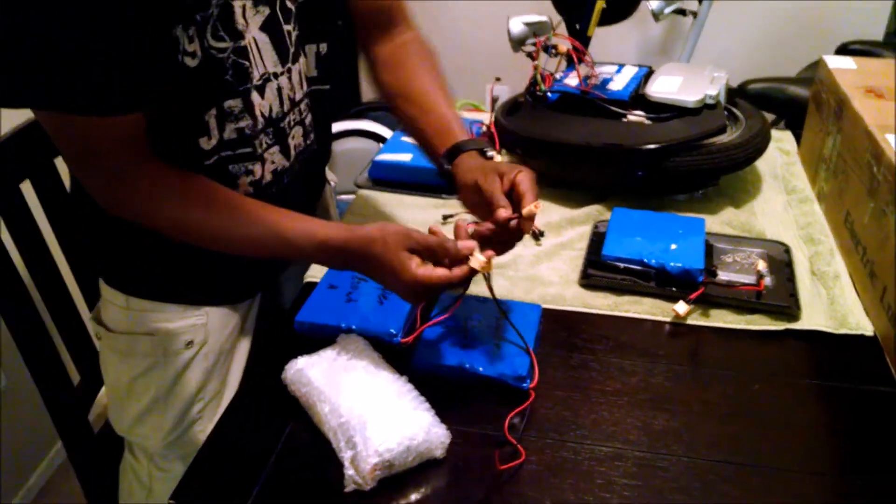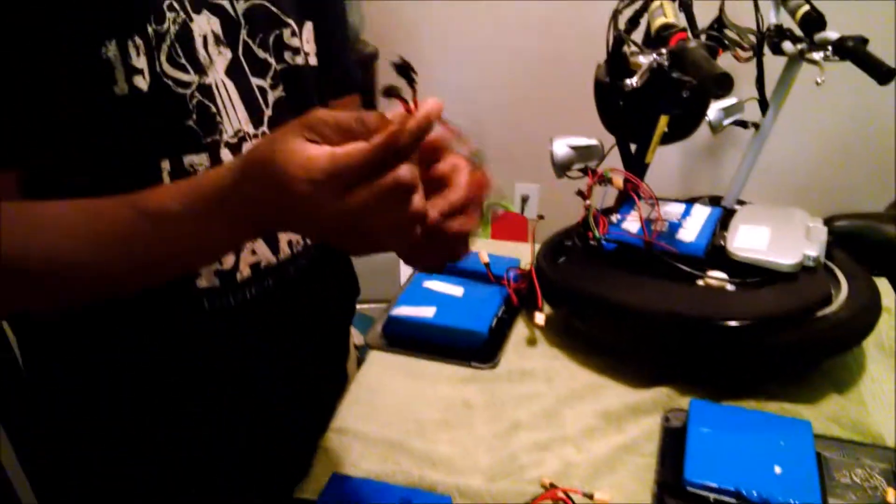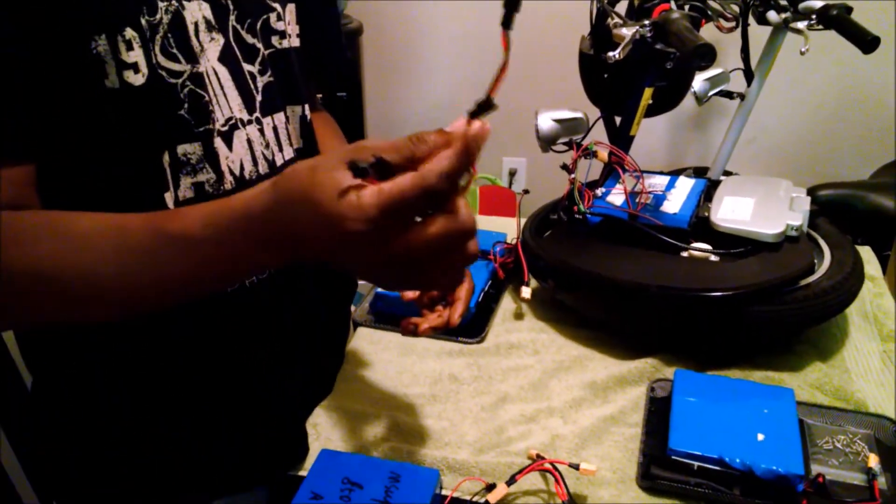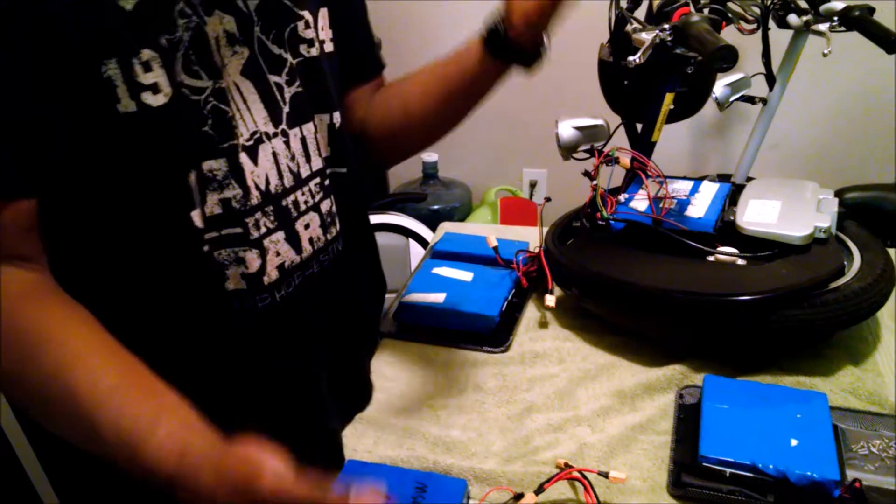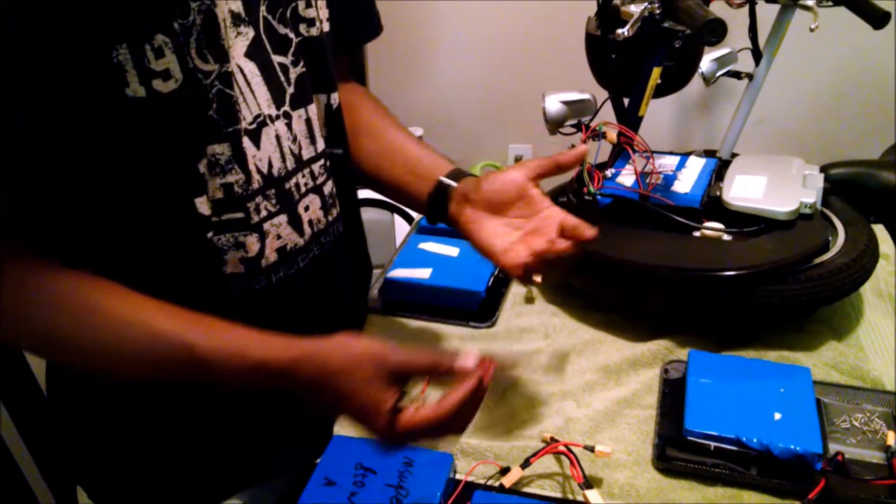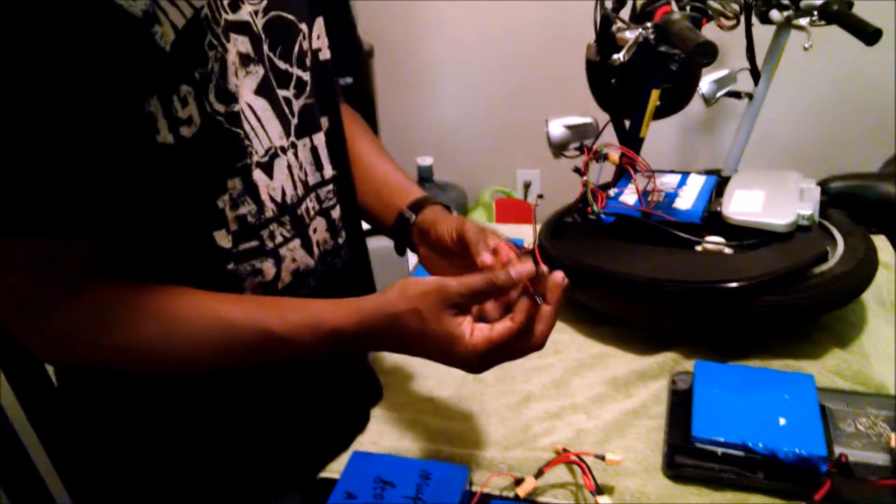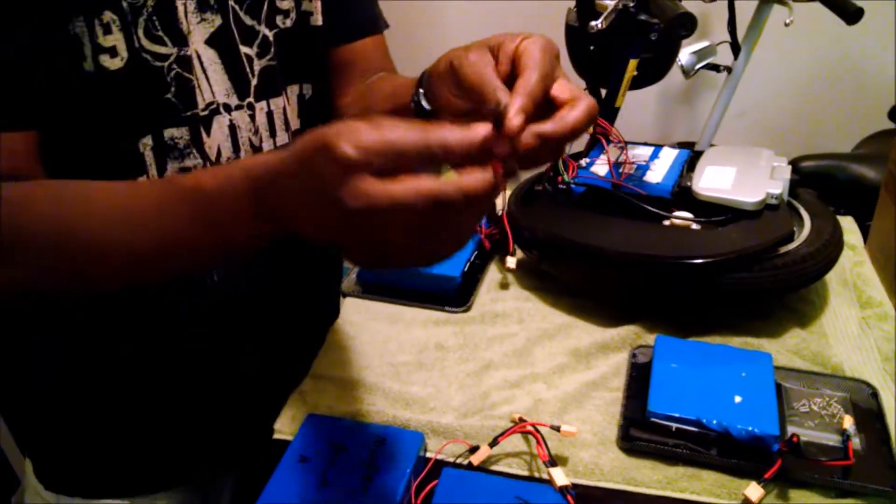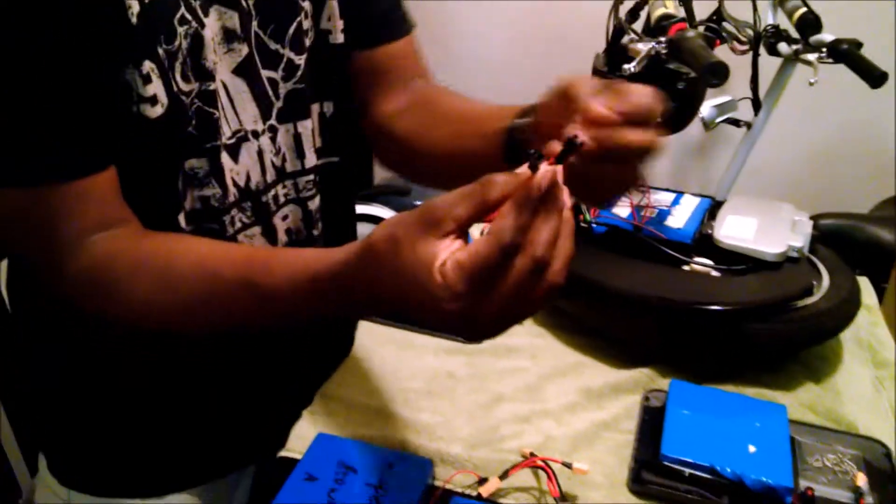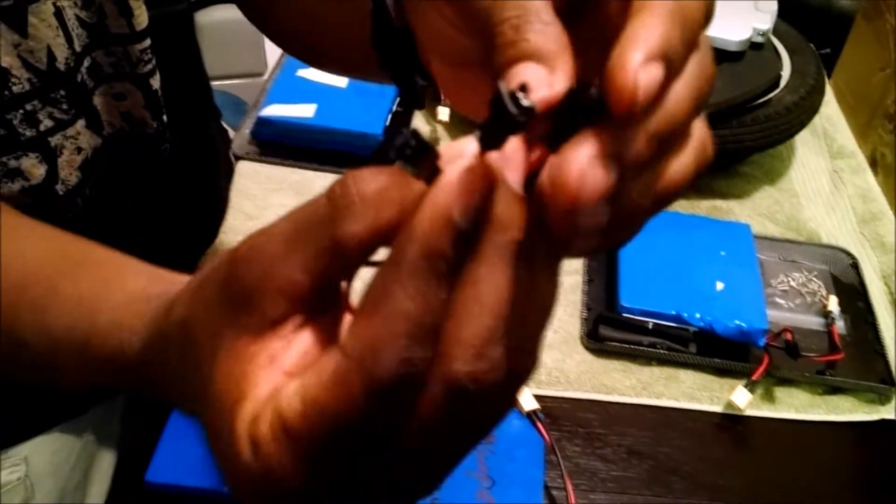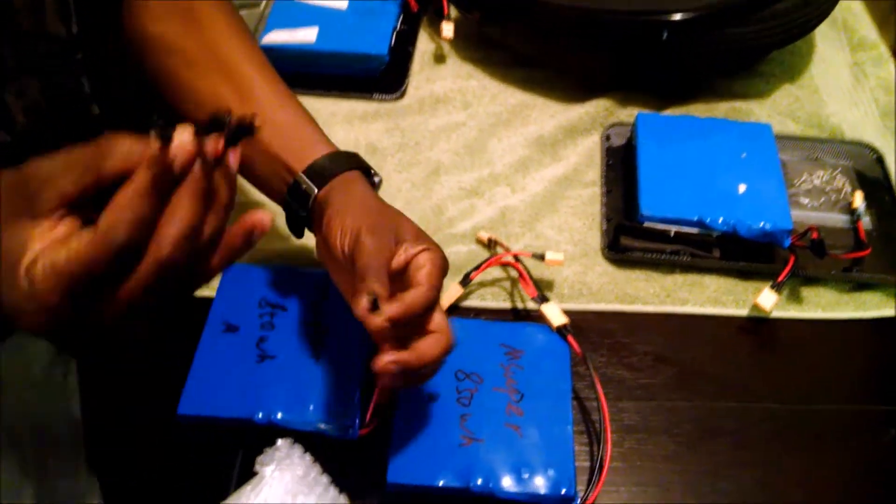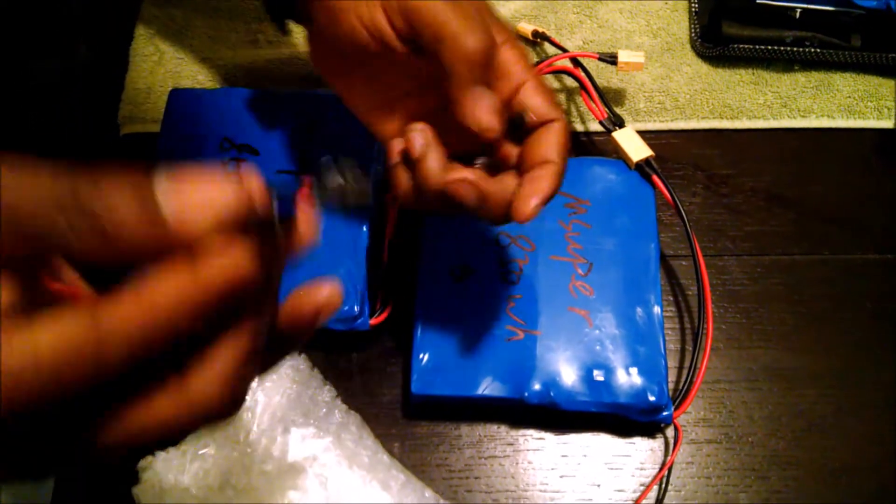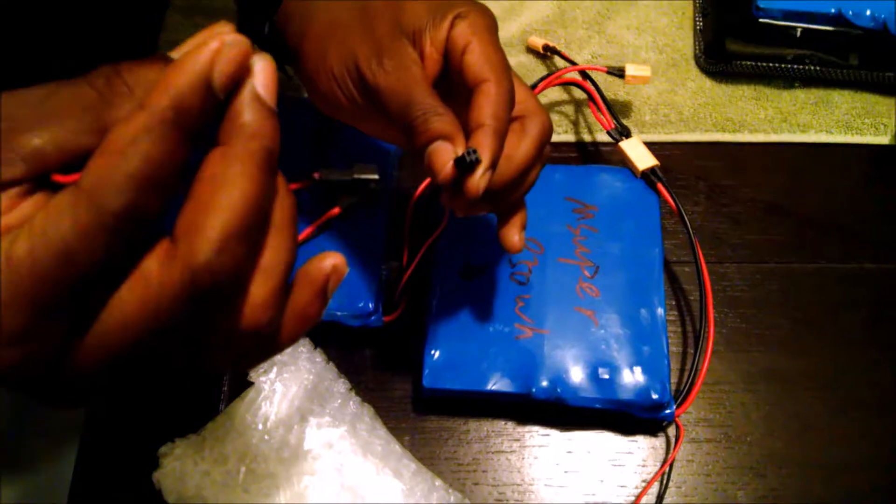Once you get all three of those connected, you're wondering what do I do with this harness? This harness is the charging circuit, so this is how you get your energy back into the battery after you've ridden for three hours or so. It's the same deal, you've got three female inputs. On this harness you have three female ends and then on each battery you will have a male corresponding connector that goes in.